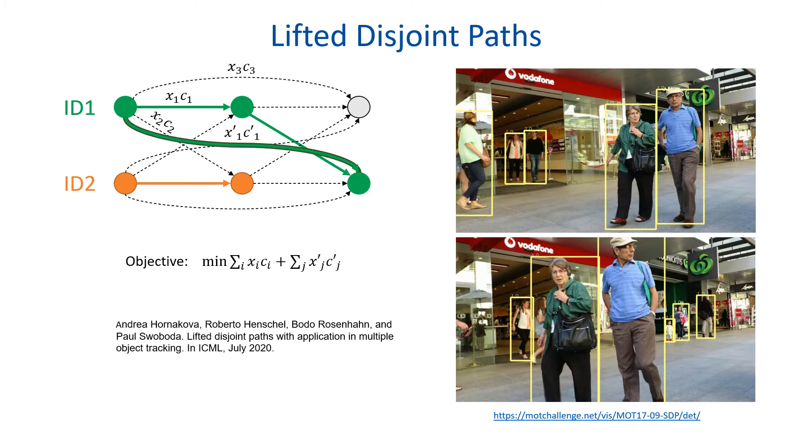Because this formulation is prone to local errors, it was extended to the lifted disjoint path formulation which achieves state of the art results because it integrates higher order information. The higher order information is integrated by adding lifted edges between non-consecutive vertices which are defined as activated if the vertices belong to the same trajectory. With corresponding edge probabilities or costs, the lifted edges are also added to the objective function. This formulation enables the compensation of local errors by meaningful lifted edge costs.